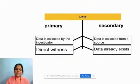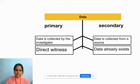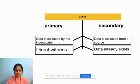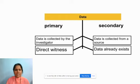We know that data collected is of two categories — primary or secondary. Primary data is collected by the investigator; that means the person himself or herself is a direct witness in the data collection. Whereas secondary data is collected from a source — that means the data already exists.